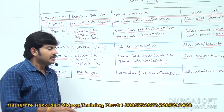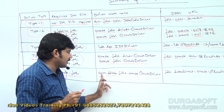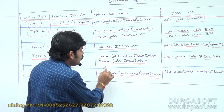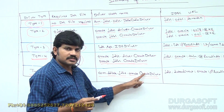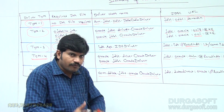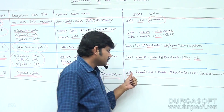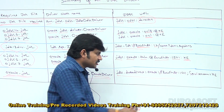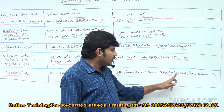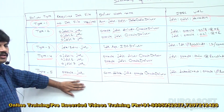The Type 5 driver class name is com.ddtek.jdbc.oracle.OracleDriver — where 'dd' stands for DataDirect technology. The JDBC URL is jdbc:datadirect:oracle://localhost:1521;ServiceName=xe. Type 5 is essentially an enhanced version of Type 4, providing extra facilities over Type 4.